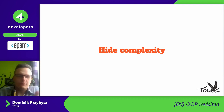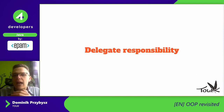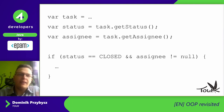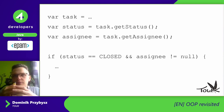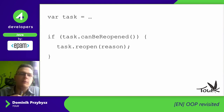When creating really good abstraction, it's very helpful to treat our objects as information experts. An information expert delegates responsibility to the object that has the most knowledge necessary to perform a task. For example, instead of getting a status and assignee from a task and making conditions externally, we should just ask the task: can this be reopened? And if so, we call reopen on the task with a specific reason. This leads to the 'tell, don't ask' rule.